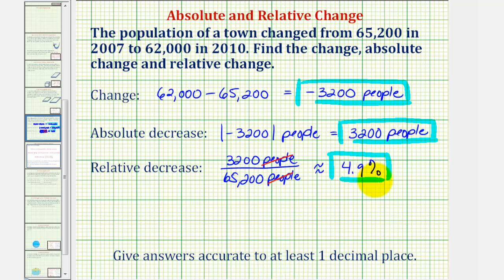Before we go though, I do want to emphasize the vocabulary here. Notice how we're saying we have a relative decrease of 4.9 percent, which is correct.